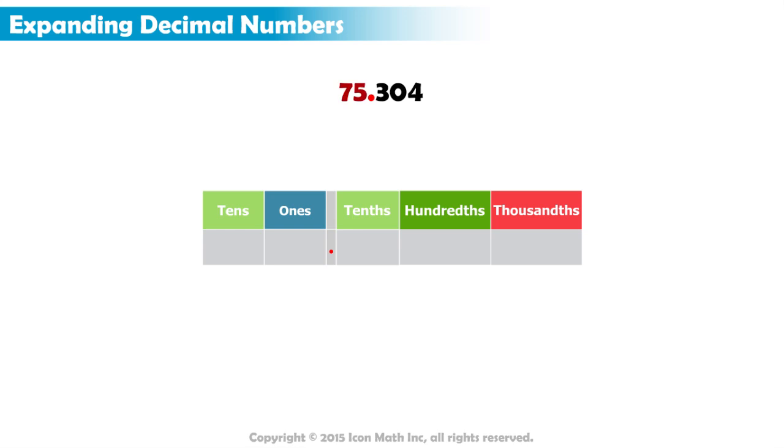Since we have a whole number part, we expand it in the same way we learned before. We have 75. 7 is in the tens place, so its value is 70. And 5 is in the ones place, so its value is just 5. Now we write a plus sign between them to get 70 plus 5. Great! We've finished expanding the whole number part.